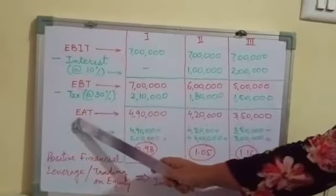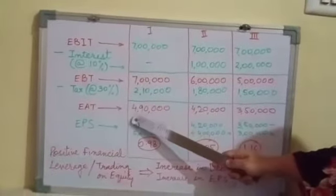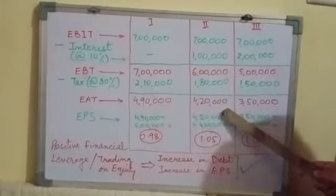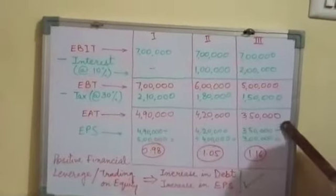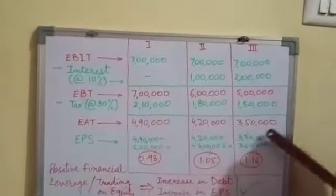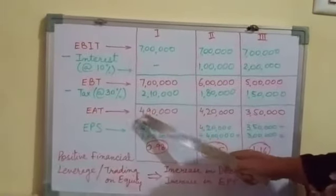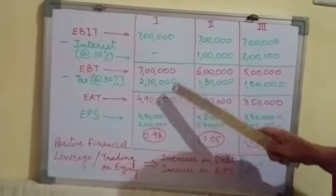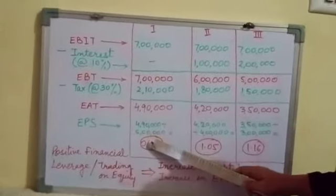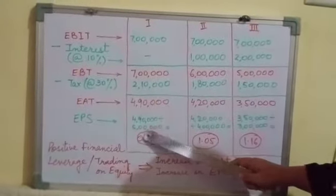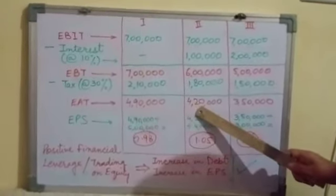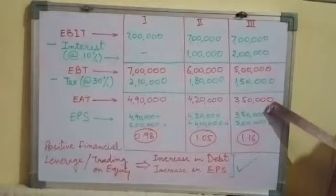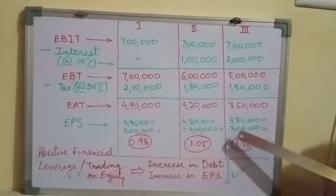After deducting taxes, earnings after taxes are: 4,90,000 in situation 1, 4,20,000 in situation 2, and 3,50,000 in situation 3. These amounts are to be distributed among equity shareholders — the real owners of the company. In situation 1, distributed among 5 lakhs equity shareholders; in situation 2, among 4 lakhs equity shareholders; and in situation 3, among 3 lakhs shareholders.